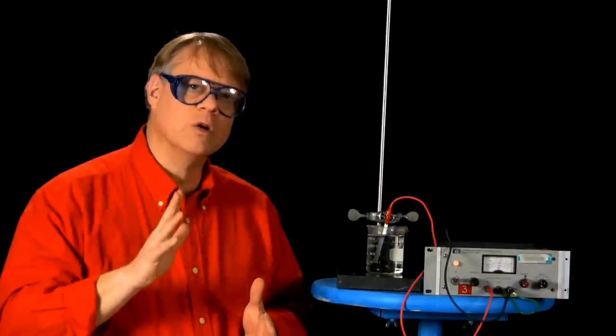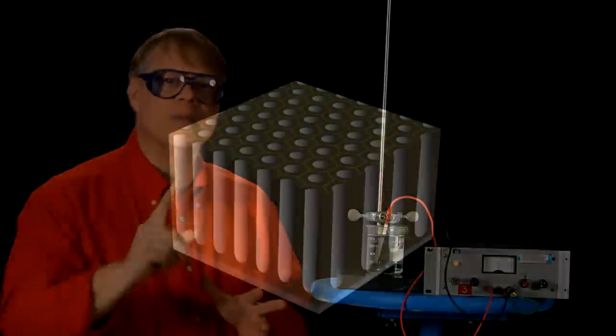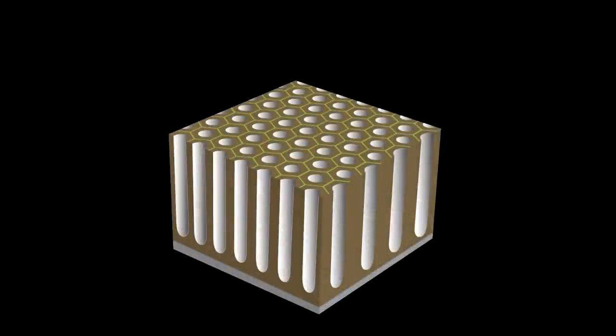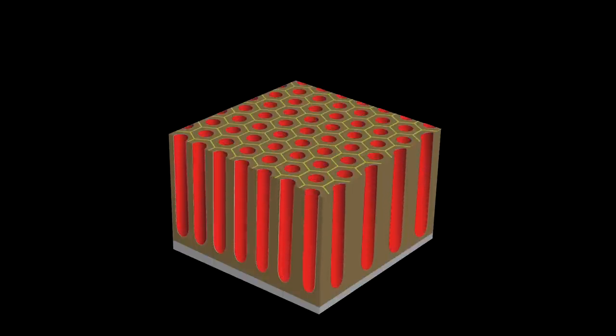The pores in this layer give the aluminum a unique characteristic important for a consumer device: the ability to be colored. The pores formed on the surface have a honeycomb pattern. Inside these layers, one can place dye of any color.